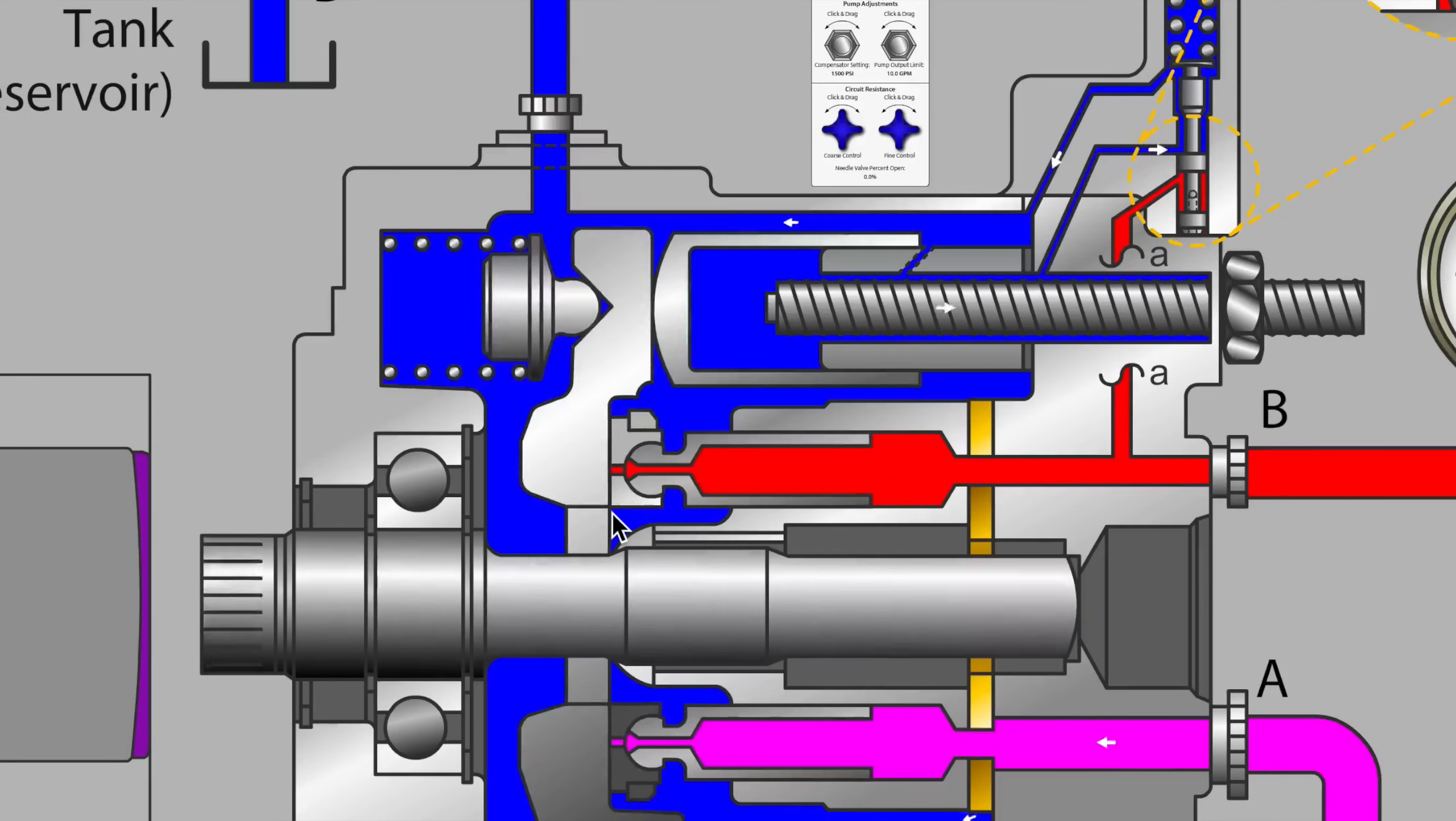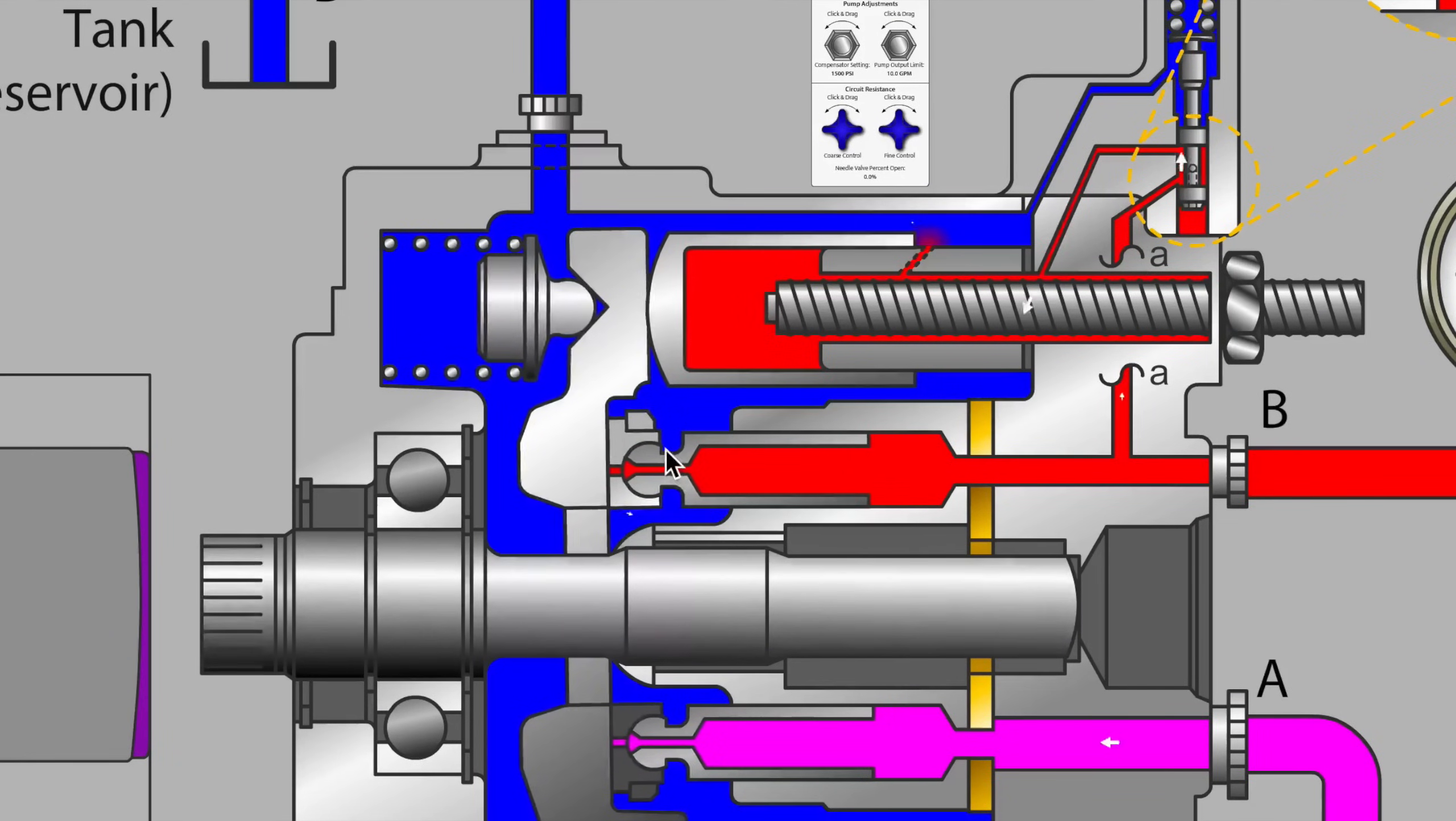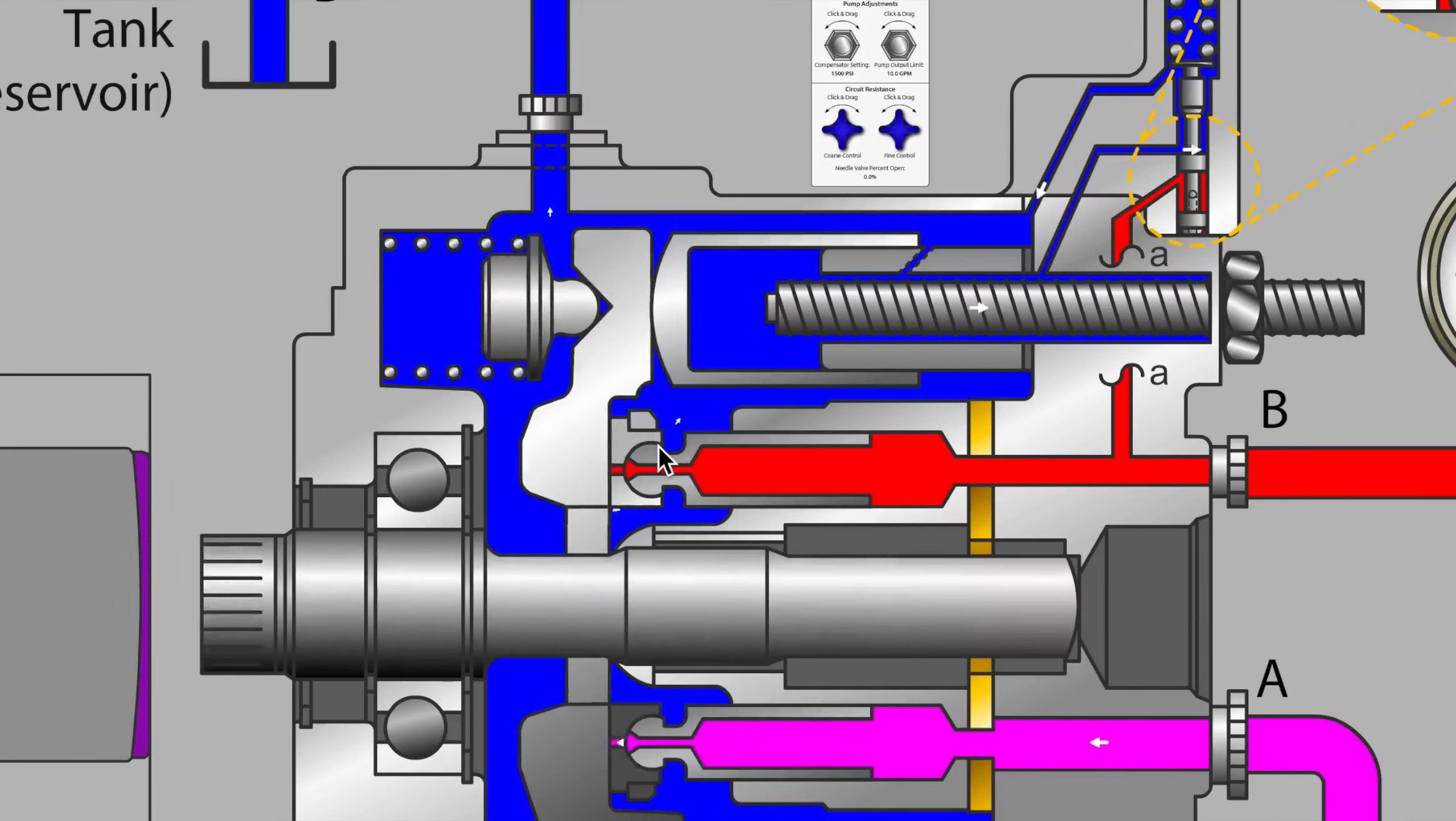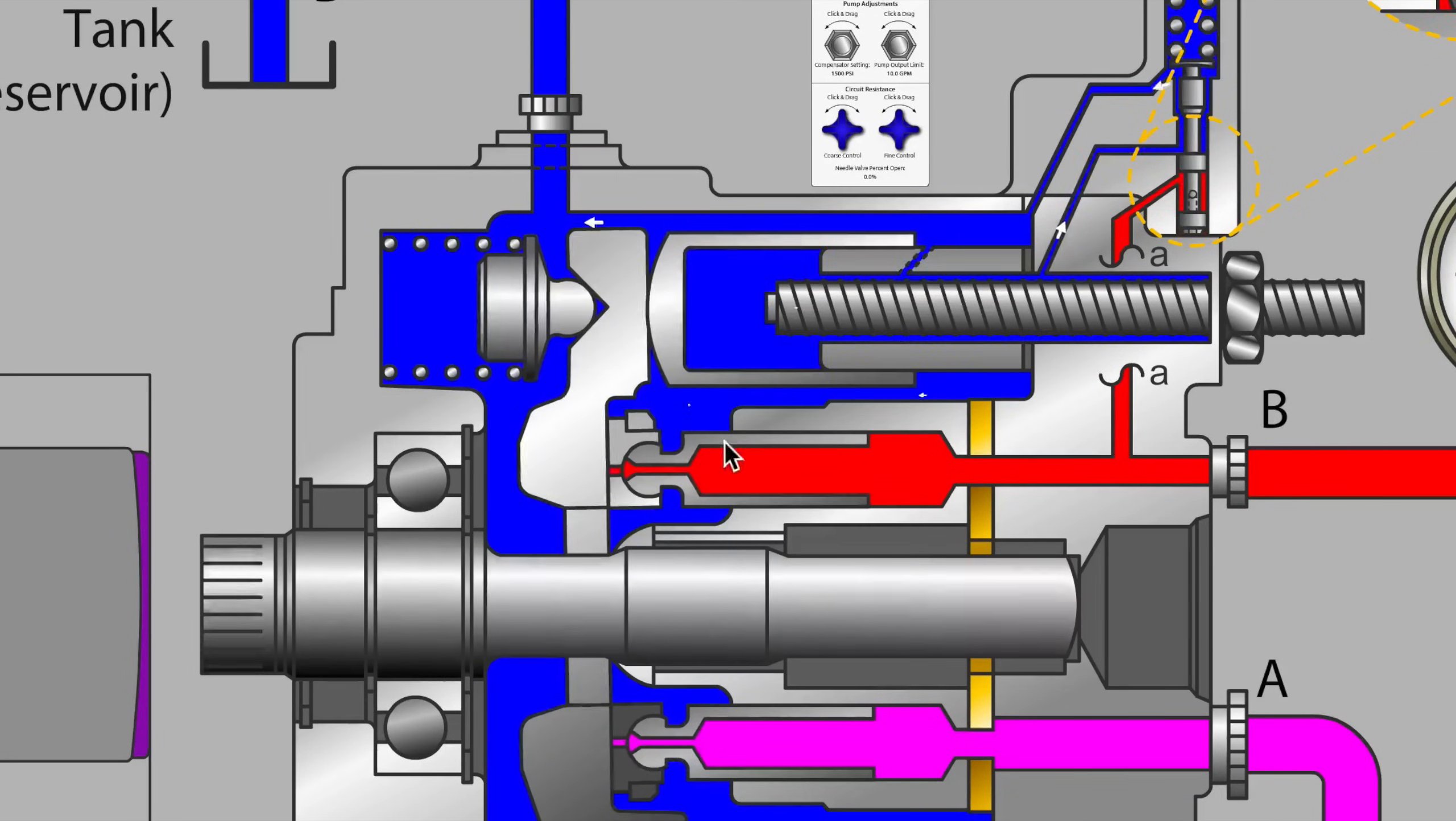So once again the slipper pad against the swash plate. The piston ball as it is socketed into that slipper pad, that's a critical point to lubricate and a clearance.